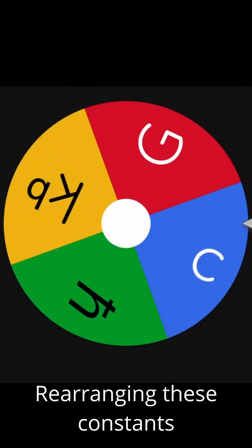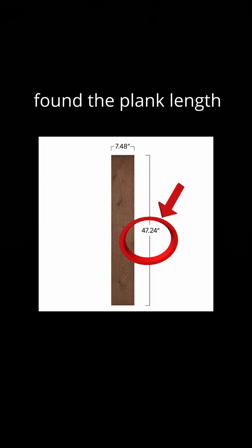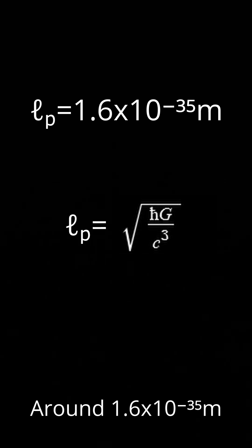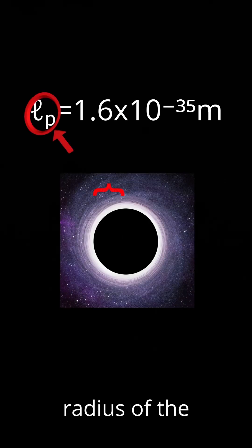Rearranging these constants, we can find the Planck units. Starting with Planck length, around 1.6 × 10^-35 meters—it's the Schwarzschild radius of the smallest black hole.